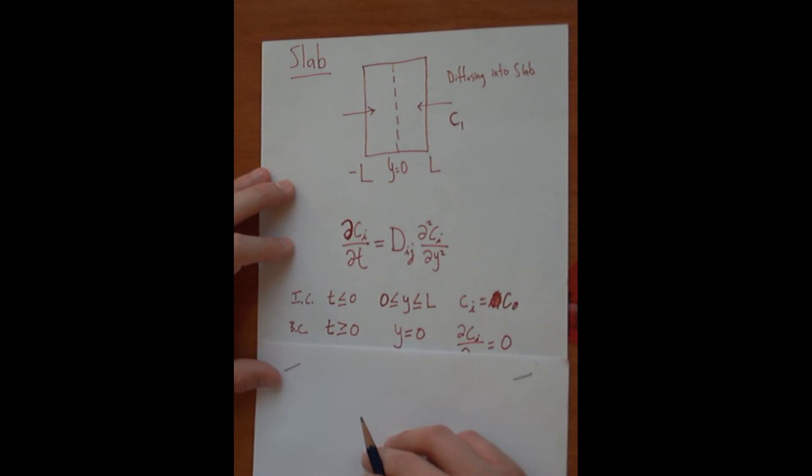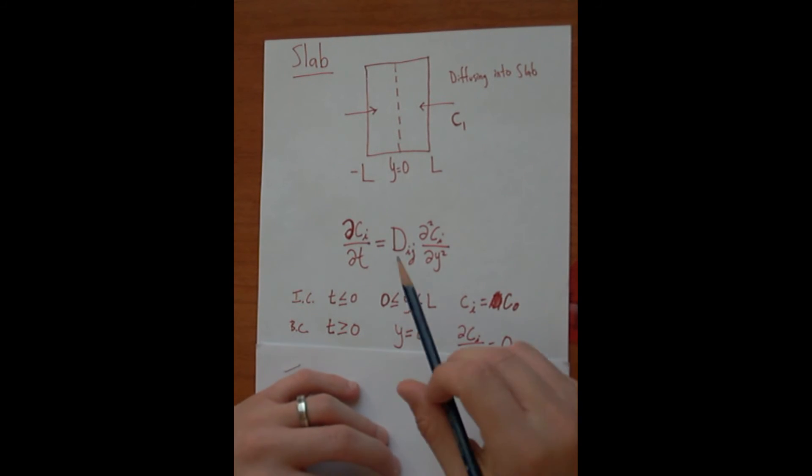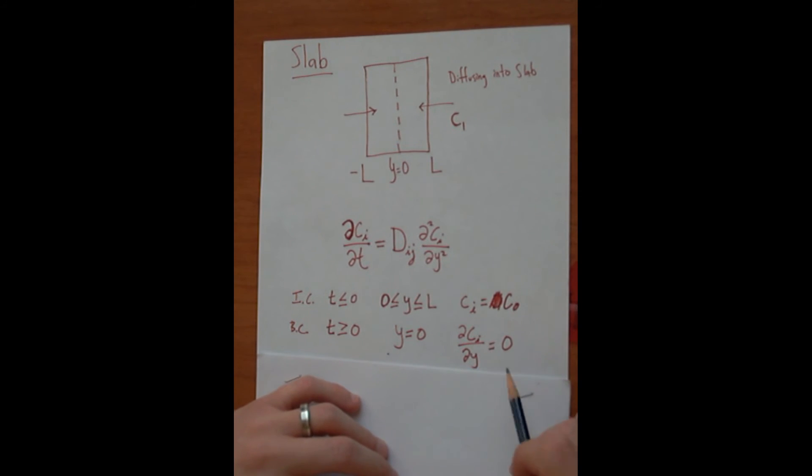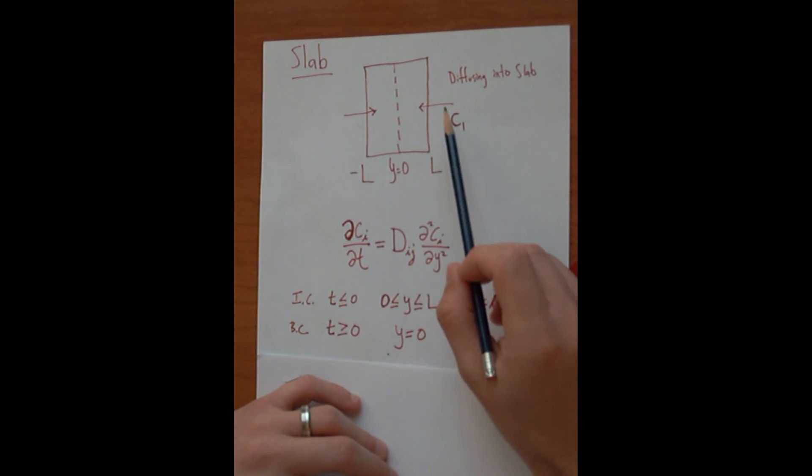So one of the boundary conditions is that whenever time is greater than or equal to zero, one of the boundaries that we want to look at here that I've chosen is the center of the slab because we're really only concerned with the half thickness. So Y equals zero, the concentration gradient is equal to zero. How did I figure that out? Well, due to symmetry,